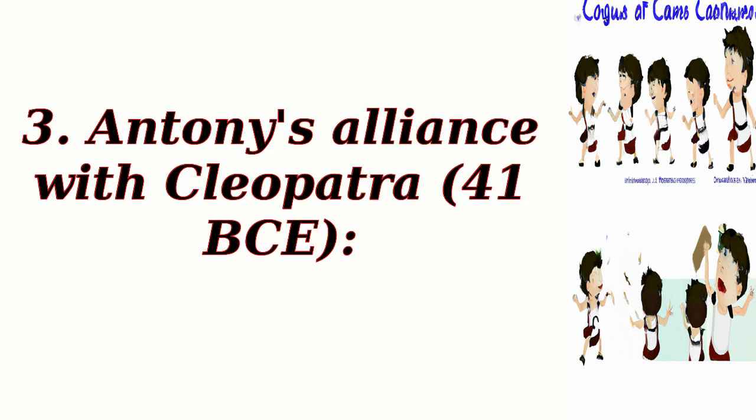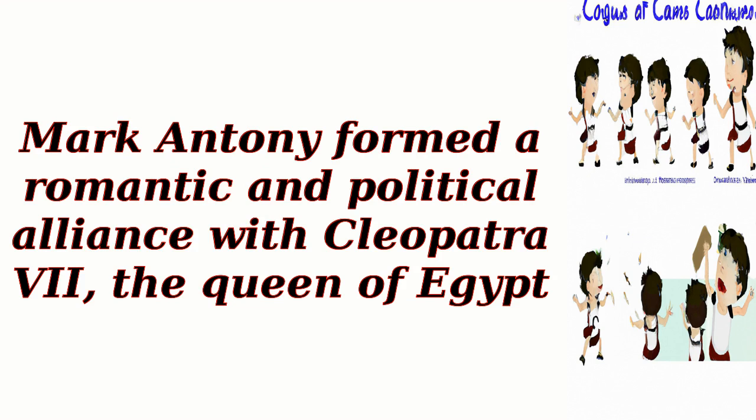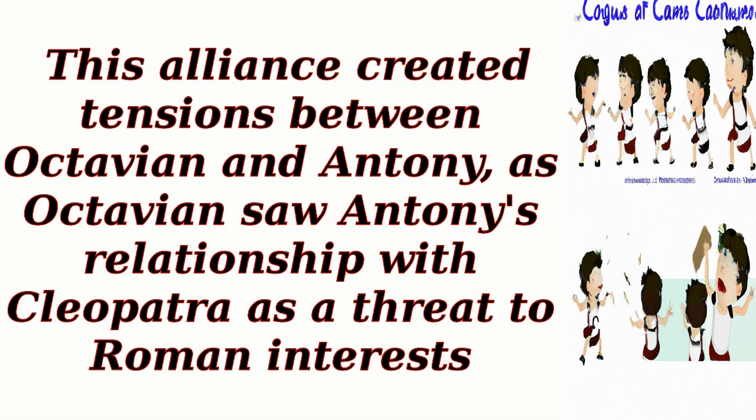3. Antony's alliance with Cleopatra, 41 BCE. Mark Antony formed a romantic and political alliance with Cleopatra VII, the Queen of Egypt. This alliance created tensions between Octavian and Antony, as Octavian saw Antony's relationship with Cleopatra as a threat to Roman interests.